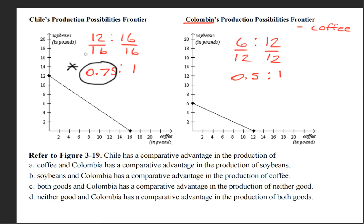This value belongs to Chile, so it is Chile who has the comparative advantage for soybeans. So if we look at our answer choices, we would get B as the correct answer.